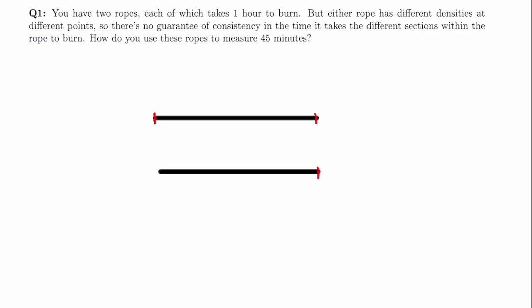So the strategy is to burn both ends of one rope and one end of the second rope simultaneously. These two are going to meet somewhere in the middle — we don't know where — but in that time, 30 minutes is going to pass. Meanwhile, this rope is going to burn somewhere up to here, which also represents 30 minutes. Once these two ropes meet, we can just burn the other end of the second rope, in which case they're going to meet in 15 minutes. So here we'll have our 45 minutes.